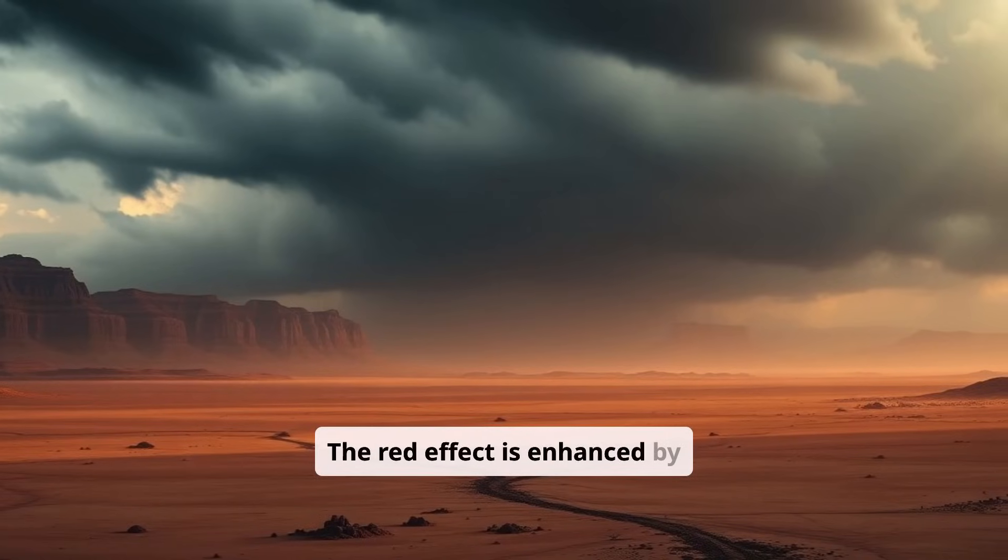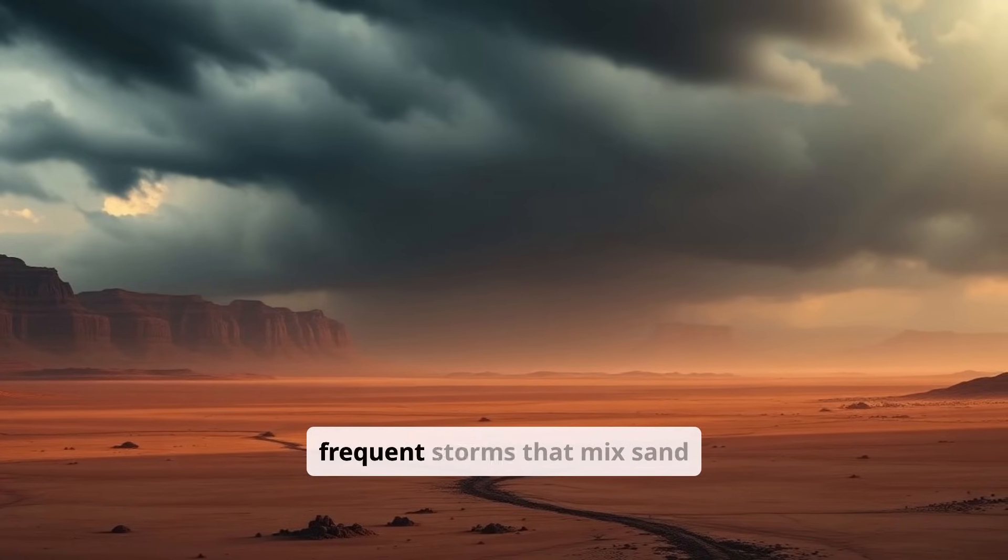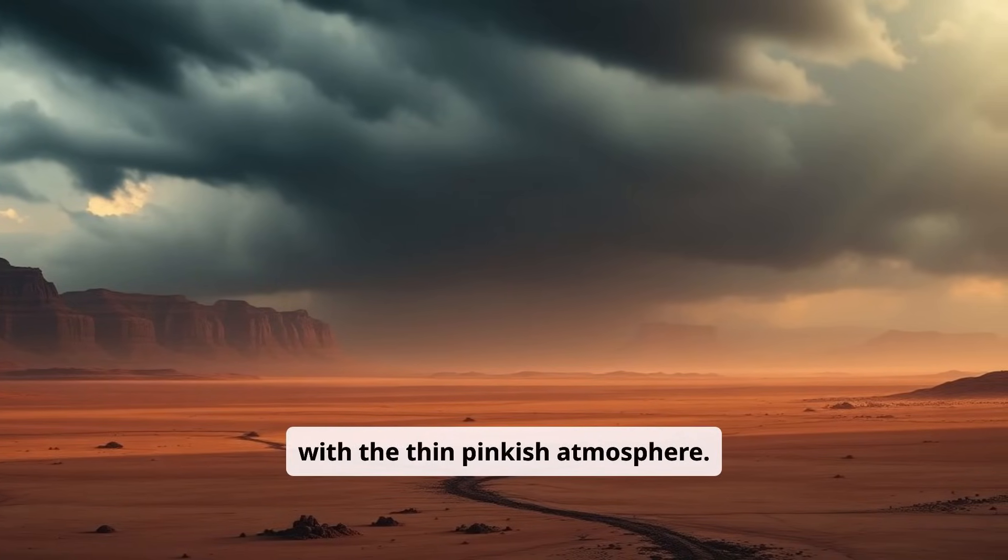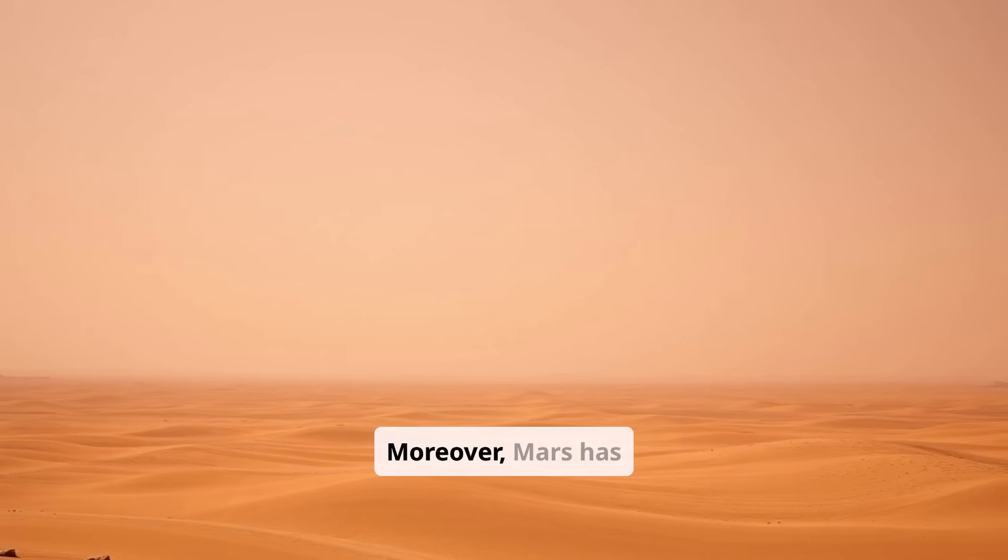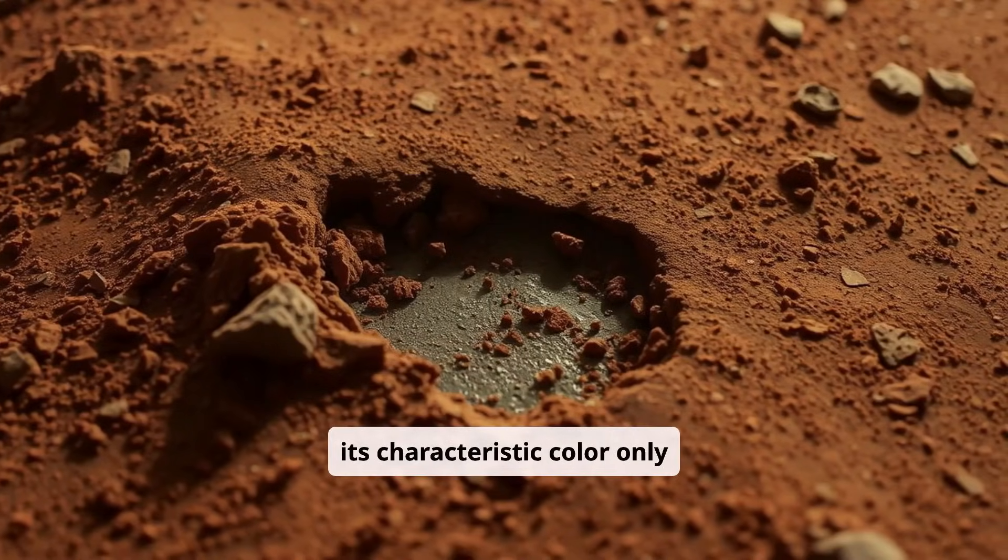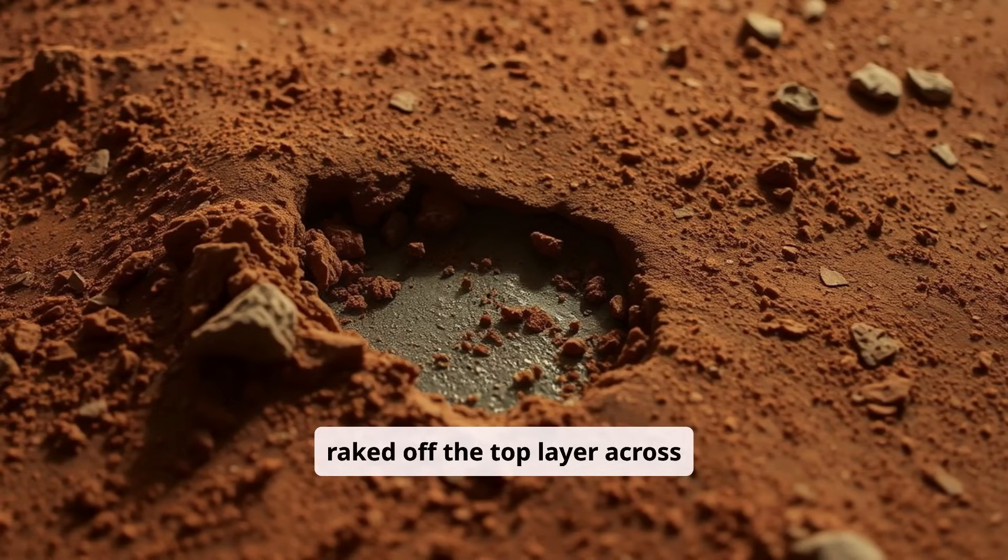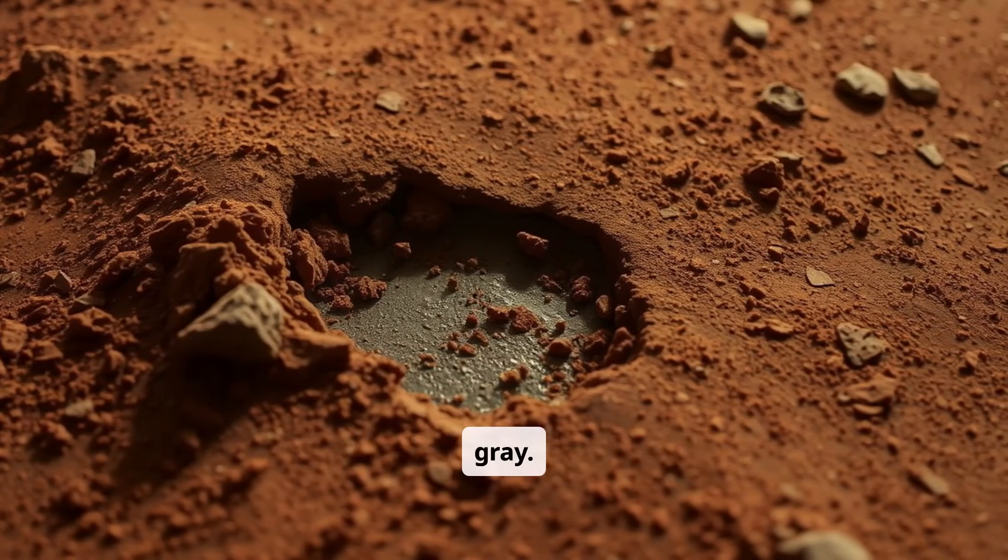The red effect is enhanced by the distance, but also by frequent storms that mix sand with the thin pinkish atmosphere. Moreover, Mars has its characteristic color only on the surface. If you raked off the top layer across the whole area, it would just be gray.